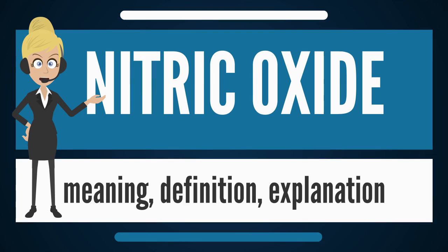In mammals including humans, nitric oxide is an important cellular signaling molecule involved in many physiological and pathological processes. It is a powerful vasodilator with a short half-life of a few seconds in the blood. Long-known pharmaceuticals such as nitroglycerin and amyl nitrite were found to be precursors to nitric oxide more than a century after their first use in medicine.